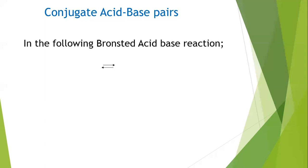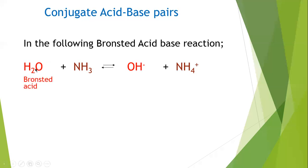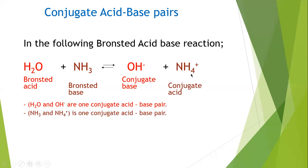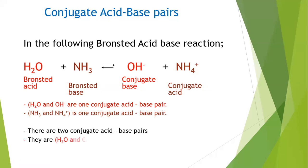One more example: H₂O reacts with NH₃ to produce OH⁻ and NH₄⁺. Water loses hydrogen so it is the Brønsted acid; it produces OH⁻ as the conjugate base. NH₃ accepts hydrogen so it is the Brønsted base; it produces NH₄⁺ as the conjugate acid. The two conjugate acid-base pairs in this reaction are: H₂O and OH⁻, and NH₃ and NH₄⁺.